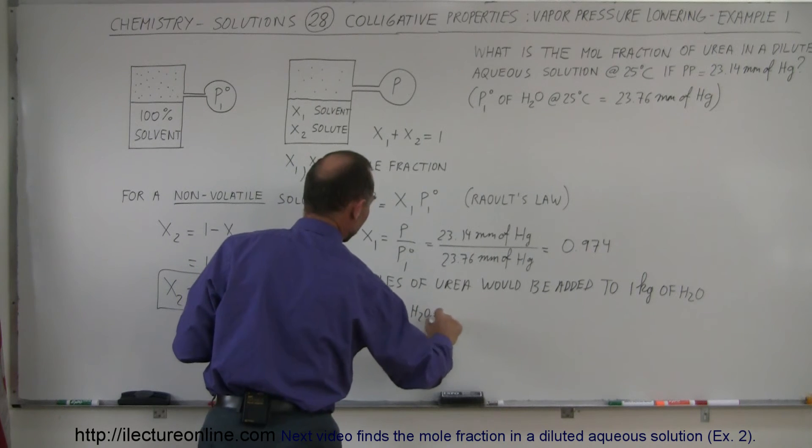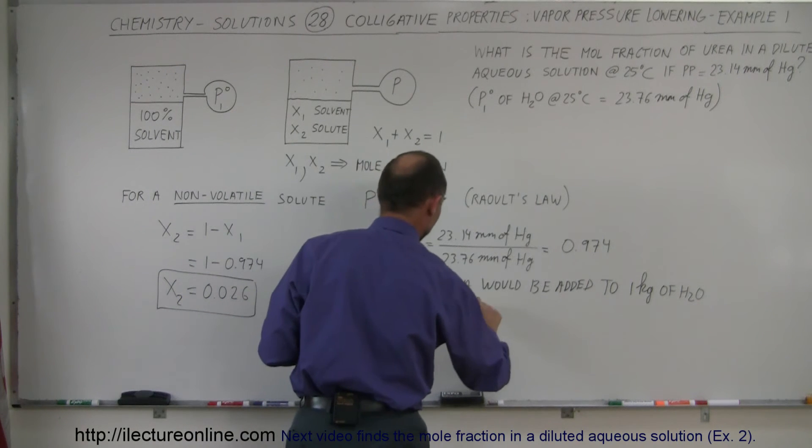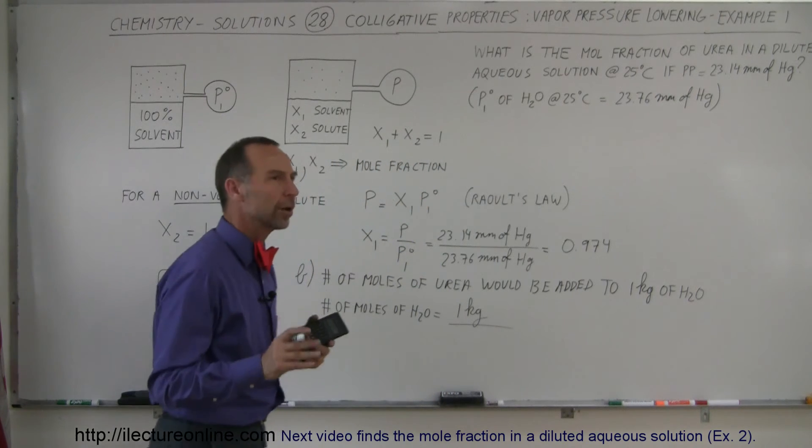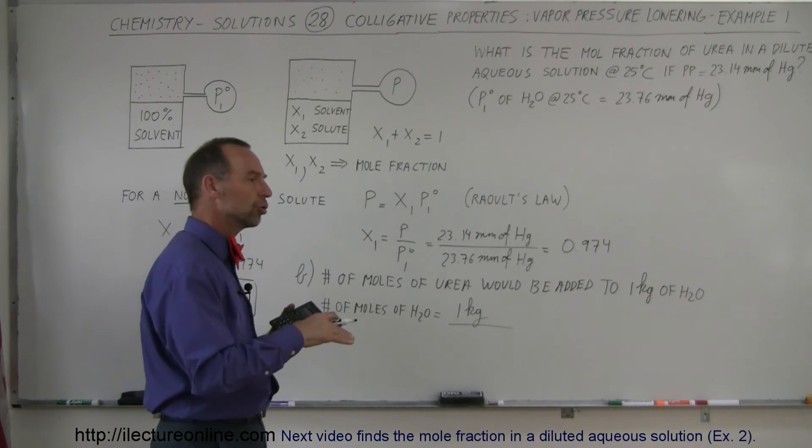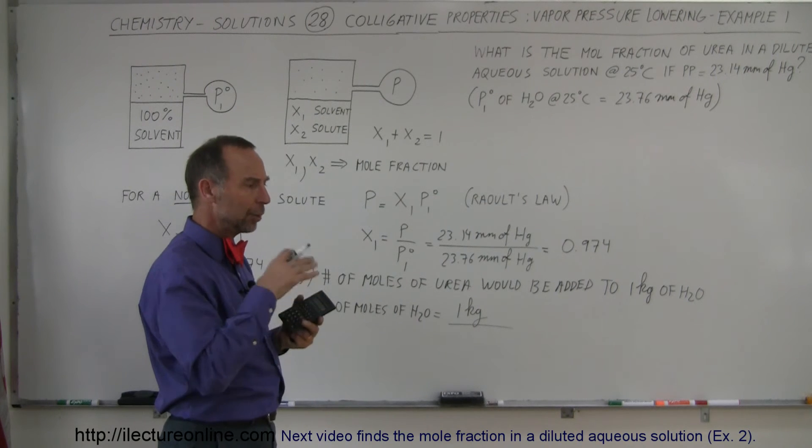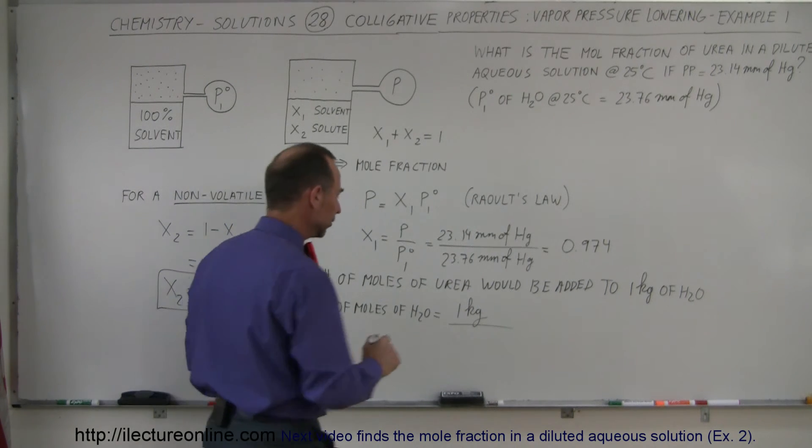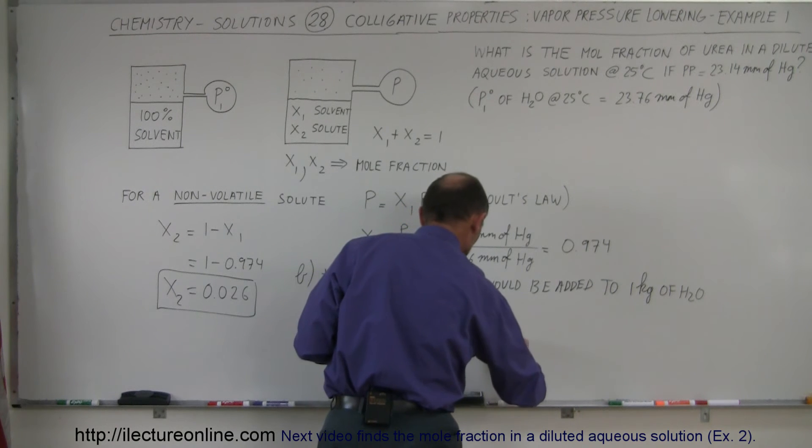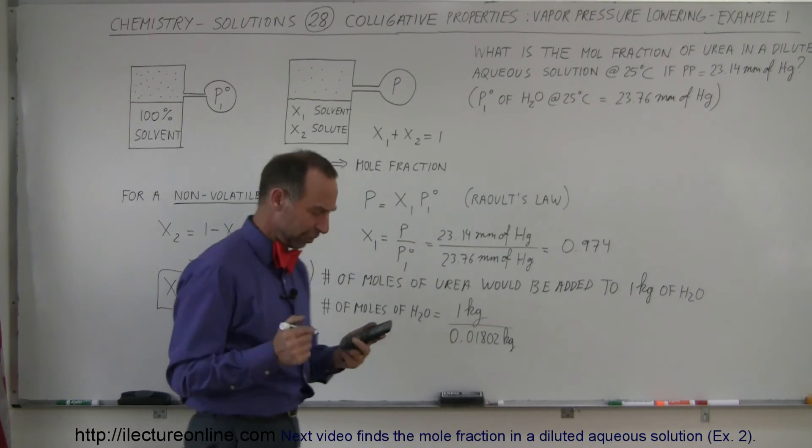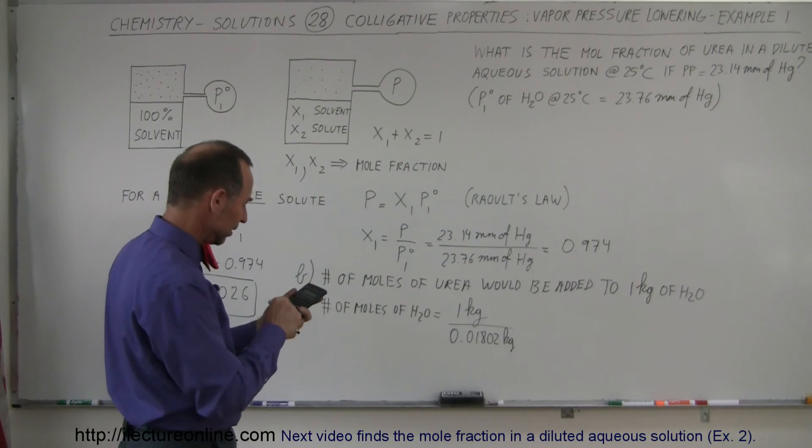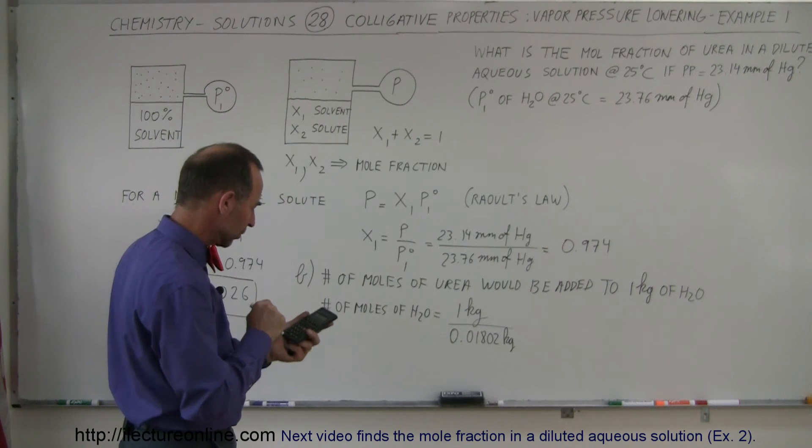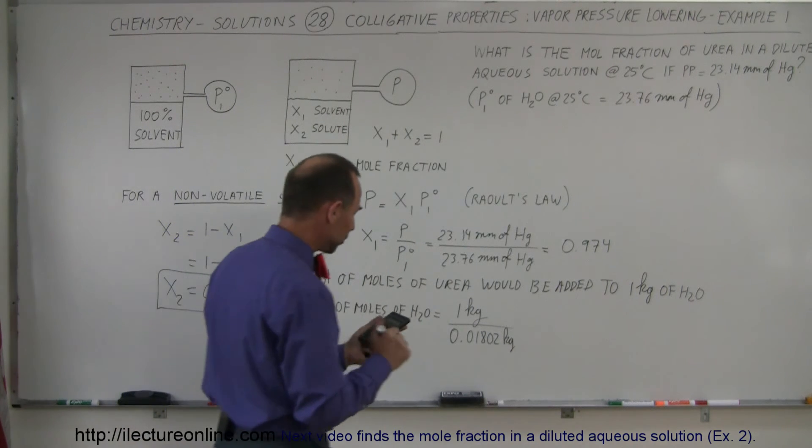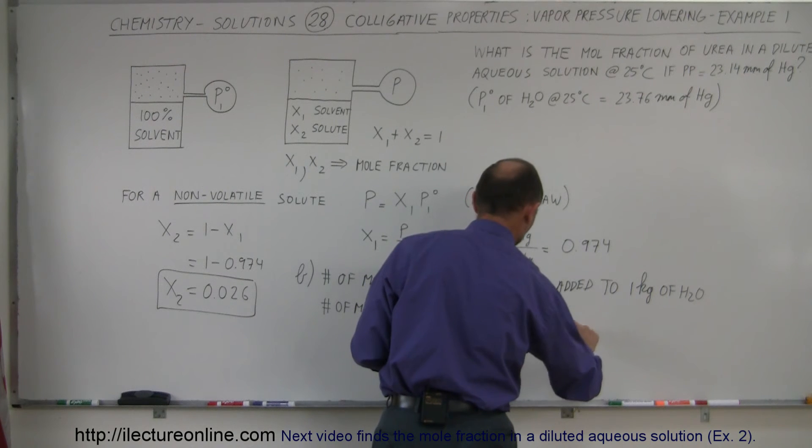So the number of moles of H2O is equal to 1 kilogram divided by the molar mass of water. Now water consists of two hydrogen atoms and one oxygen atom together is about 18.02 grams, which is 0.01802 kilograms. I know that the 0.02 is probably not necessary, but just for good measure. So we have 1 divided by 0.01802 equals, and I get 55.5 moles.